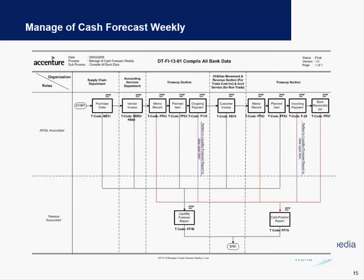For the cash forecast, the Accounts Payable or GL accountant is in charge of creating various documents at different stages — a purchase order, a vendor invoice, and an outgoing payment created by the treasury department. At different stages, the liquidity forecast report is generated by a treasury accountant. These two reports — the liquidity forecast and cash position report — give a true picture of the actual cash or liquidity balance in the company. Multiple departments working together create these reports at the end of the month.